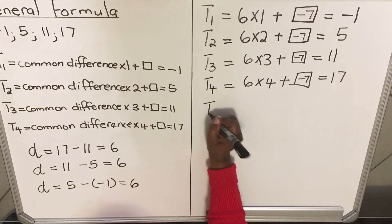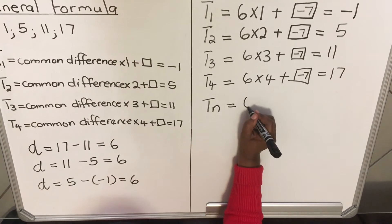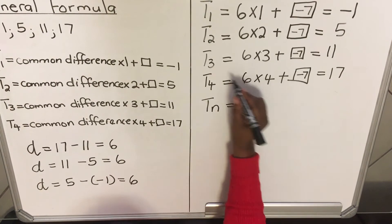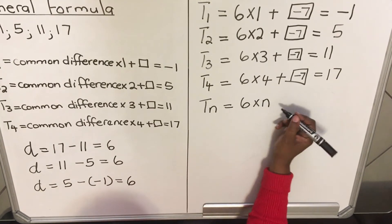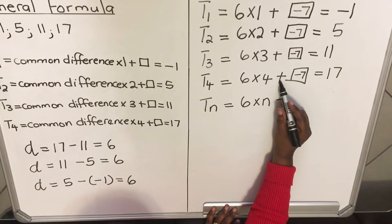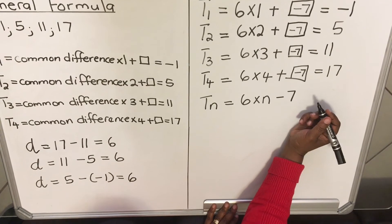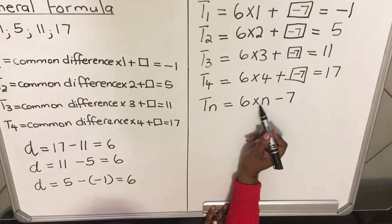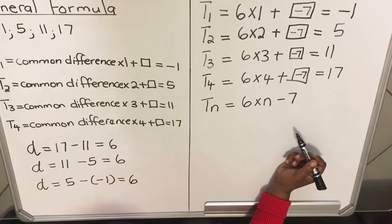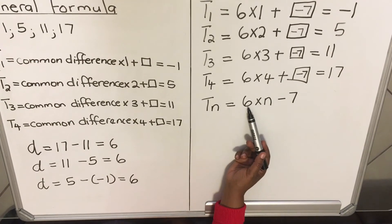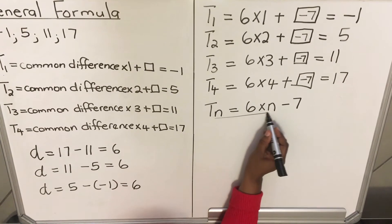Now the general term — general means it works all the time. We call it Tn, meaning Term n, any term. It equals 6 times n, and since we always add minus 7 — positive times negative gives negative 7 — the general term is Tn = 6n minus 7. Every time we multiply 6 by n and subtract 7, we get the term.